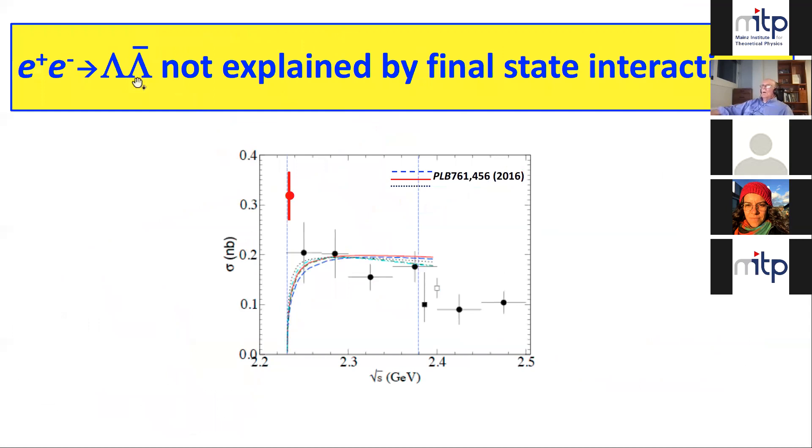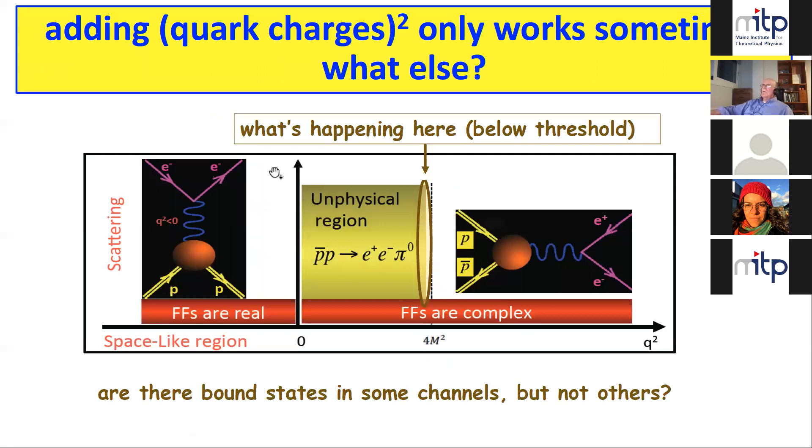For lambda λ̄, these theorists who fit the p p̄ cross-section I showed you earlier also tried to fit the lambda λ̄, but they can't accommodate this lowest energy point. They can squeeze in these other points, but they can't accommodate this low energy point. So it can't be explained by final state interactions. Adding quark charges doesn't work for things. So what else is going on?